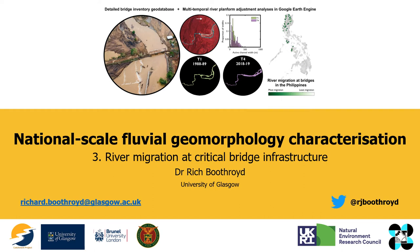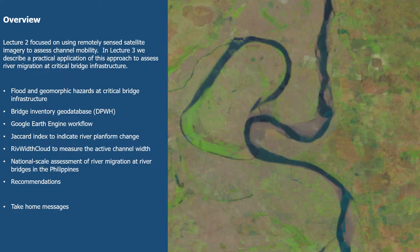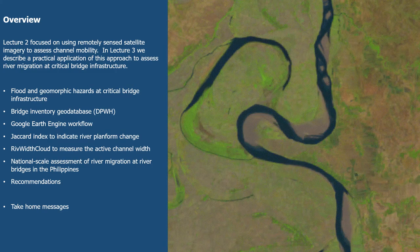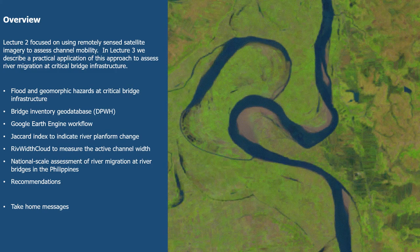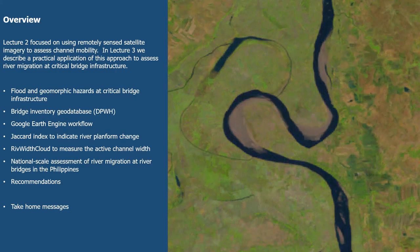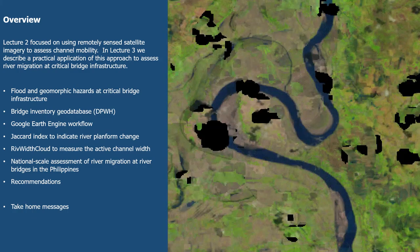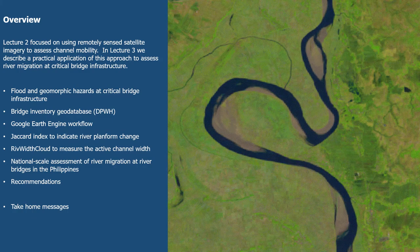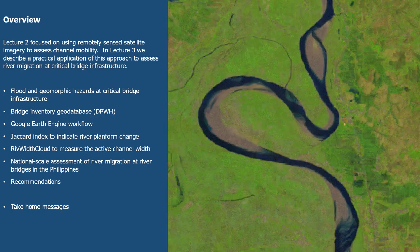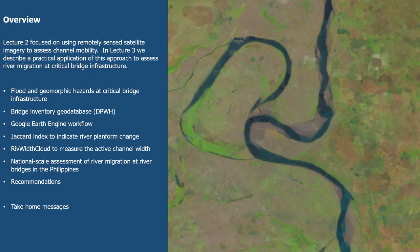Hi everyone, welcome back to lecture three of the national scale fluvial geomorphology characterization series, where today we'll be taking a look at river migration at critical bridge infrastructure in the Philippines. In lecture two we focused on using remotely sensed satellite imagery to assess channel mobility and river migration, and today we'll be describing a practical application of this approach to look at river change around critical bridges in the Philippines.